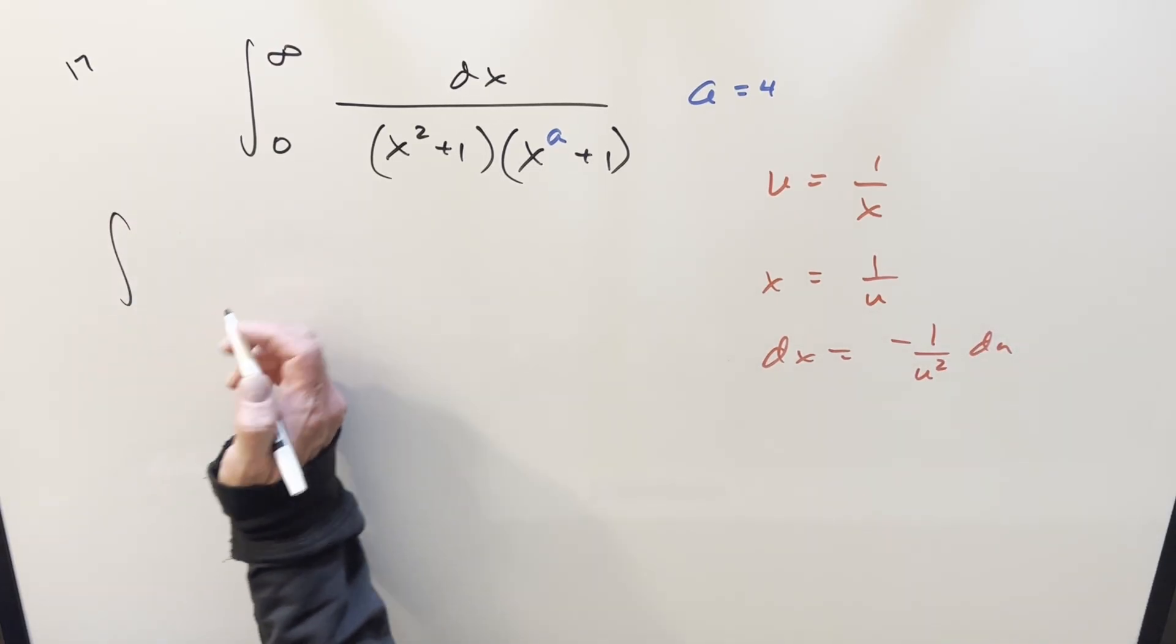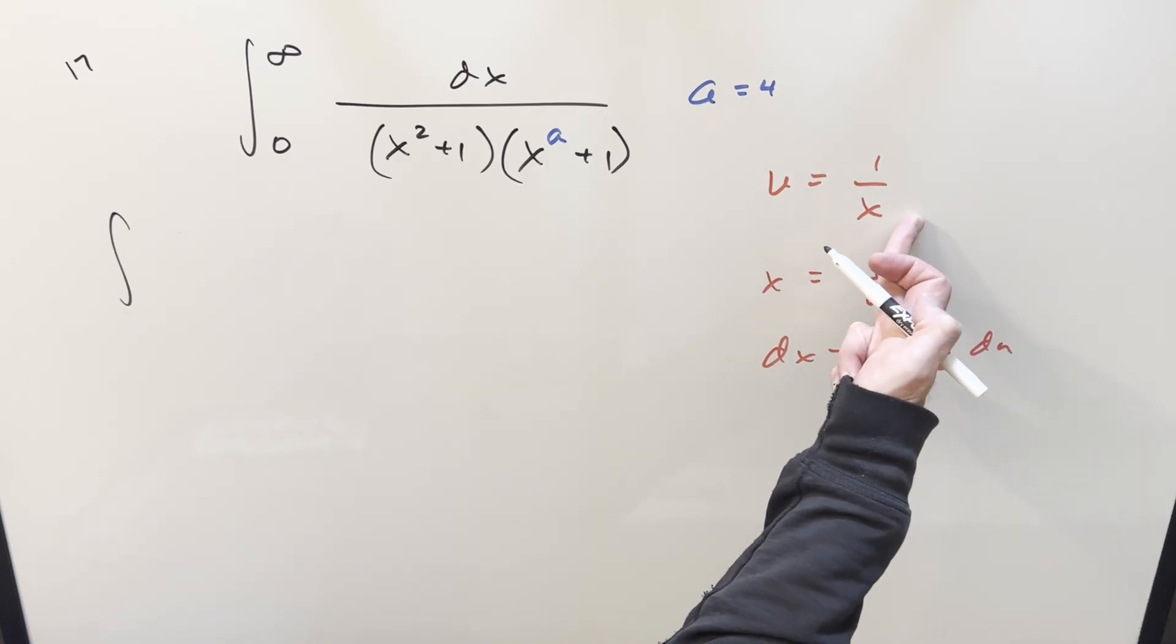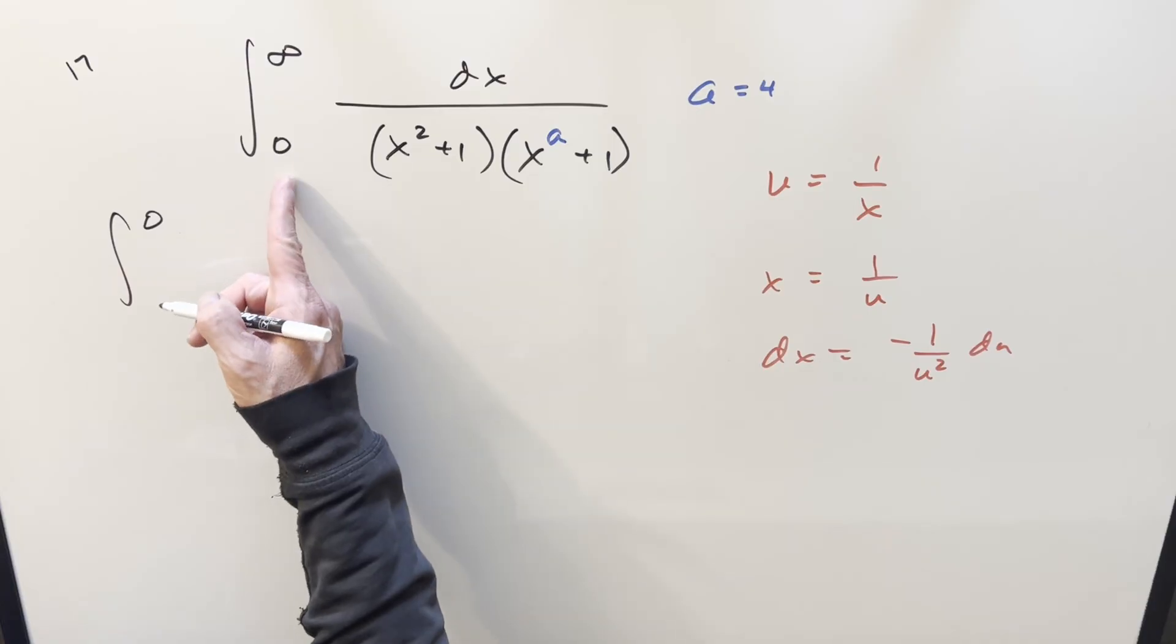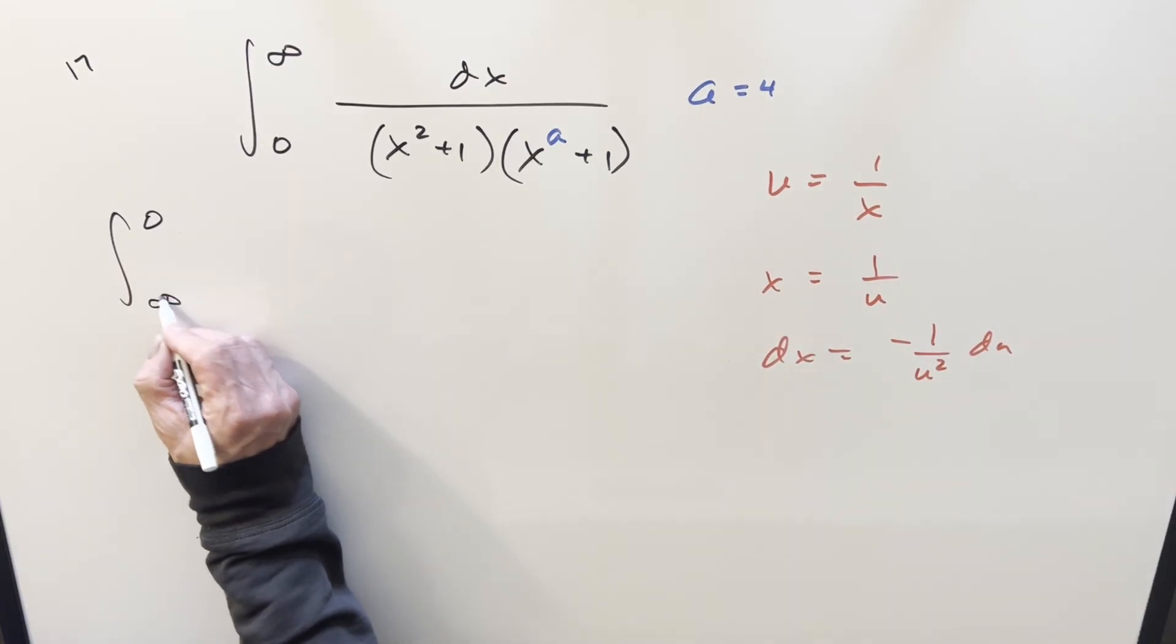So when we substitute, it's going to flip the bounds because you plug infinity in here. Now this is going to zero on the positive side, but we don't really care about that. And then you plug zero in here, it's going to be going to positive infinity.